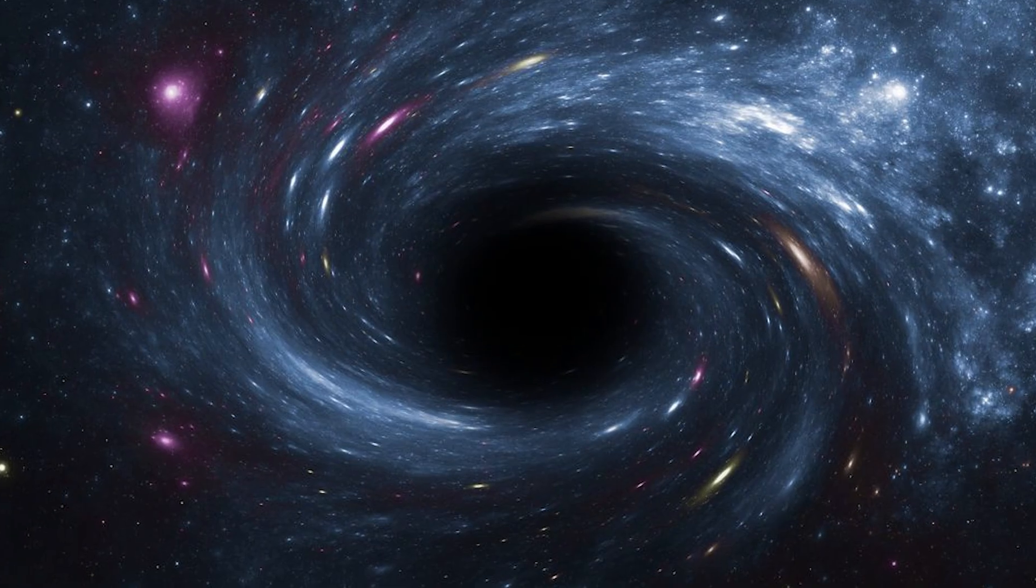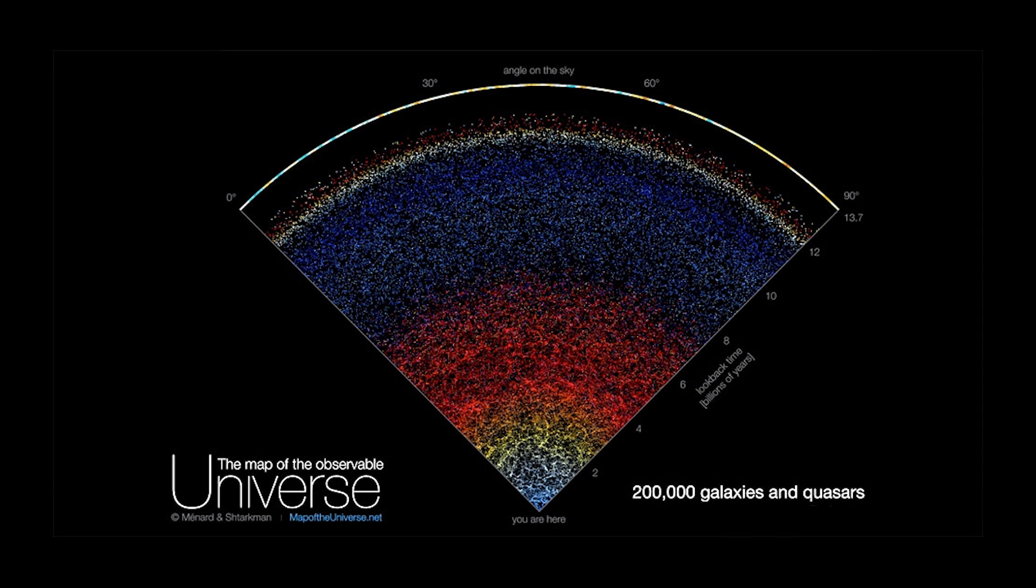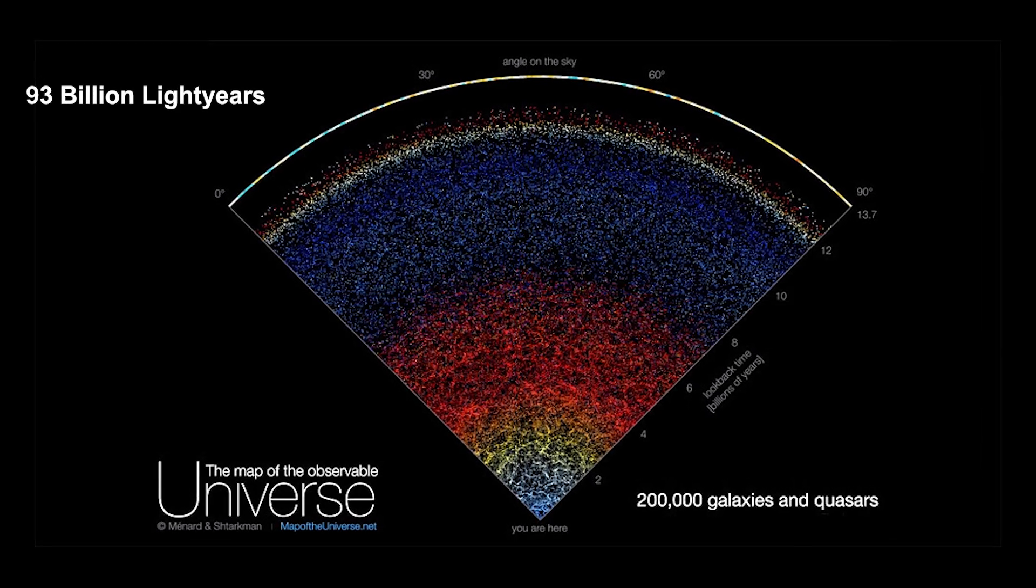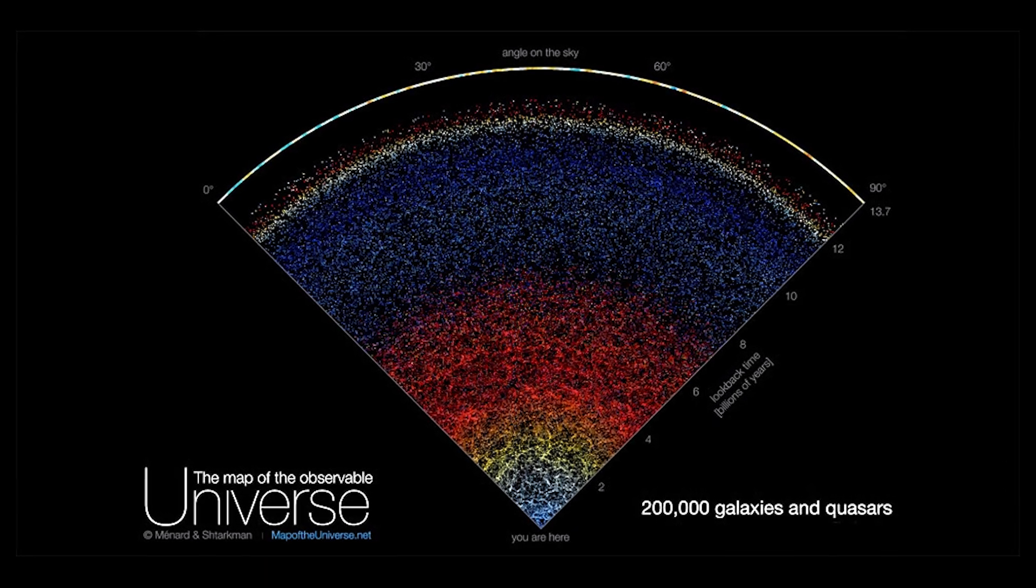Let's begin with what we can see. Our universe, at least the observable part of it, stretches about 93 billion light-years across. It contains everything we've ever seen: galaxies, nebulae, stars, planets.